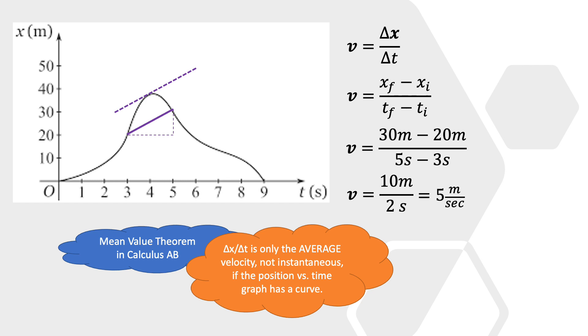So, basically, here's the moral of the story. If you use delta x over delta t without doing a derivative, you're calculating the average velocity, not the instantaneous, especially if the graph has occurred.